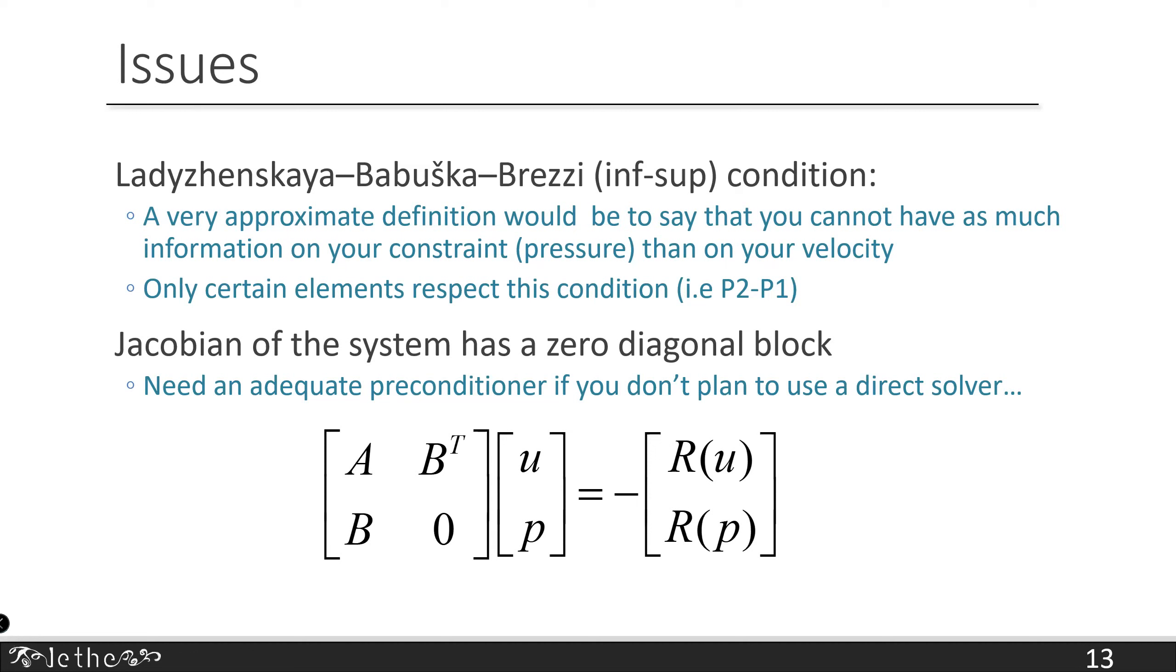There are some issues with solving these incompressible Navier-Stokes equations. The first one is the Ladyzhenskaya-Babuška-Brezzi inf-sup condition. A very approximate definition would be you cannot have as much information on your constraint, in this case your Lagrange multiplier which is pressure, than on your velocity field. What it means is there are only certain finite elements that you can use. For example, P2-P1 elements are inf-sup stable. One consequence is that the Jacobian of the nonlinear equation has a non-zero diagonal block, so it's a saddle point problem. You need an adequate preconditioner if you don't plan to use a direct solver. I want to do large simulations with millions or tens of millions of degrees of freedom, and using a direct solver is not an option.